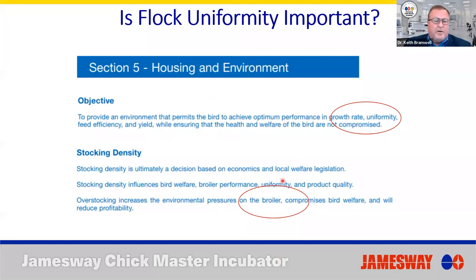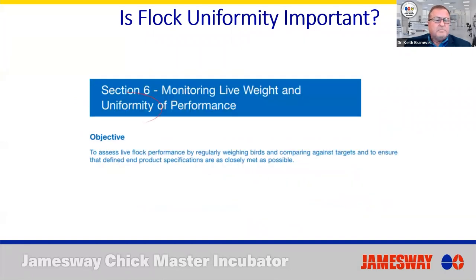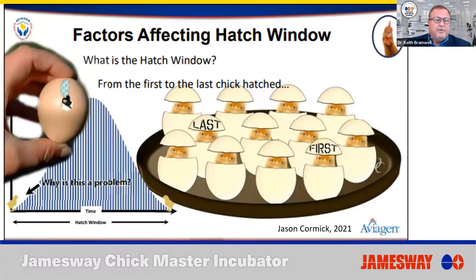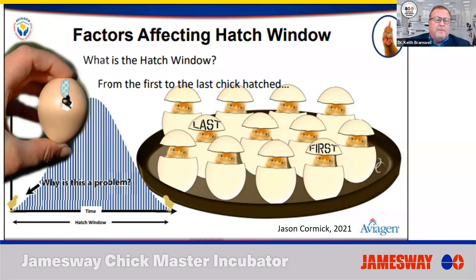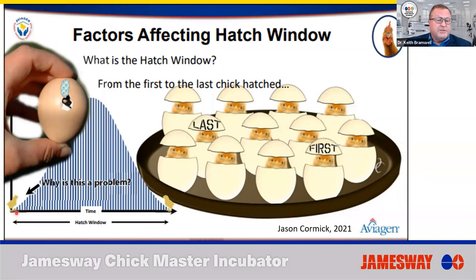When we look at housing environment, we want housing such that growth rate is uniform — they can all eat and drink at the same time. So factors that affect hatch window: I borrowed this slide from Jason Cormack from Aviagen. What is the hatch window? The time from the first chick that hatches to the last chick. Is it actually the very first chick, or is it when you get an upward swing of first chicks hatching to the last chick hatching? That's really what we're measuring — that time period from first chicks hatching to last chicks hatching.